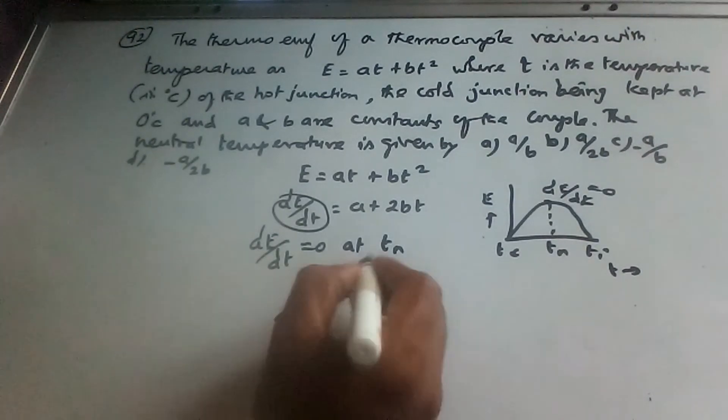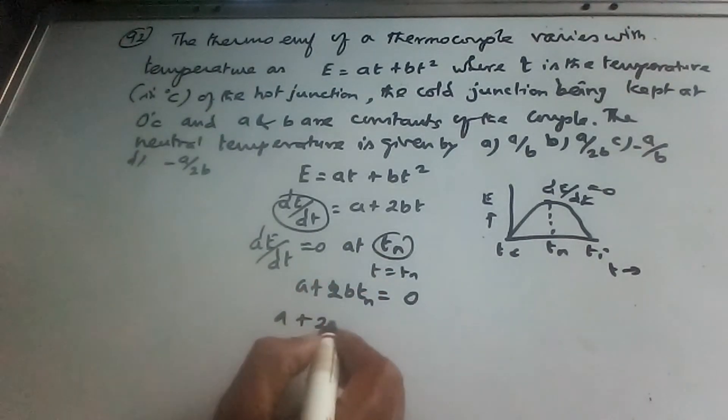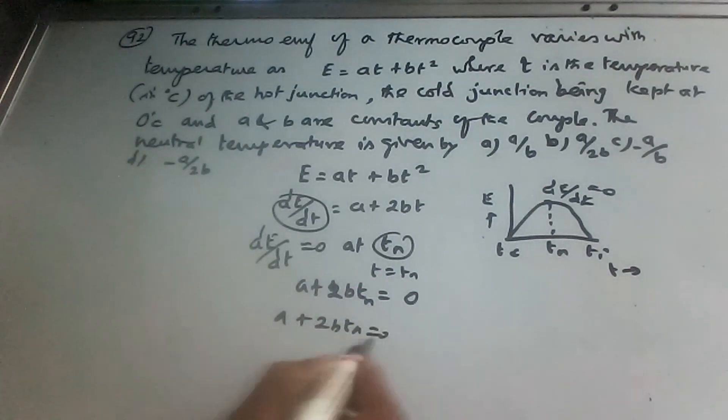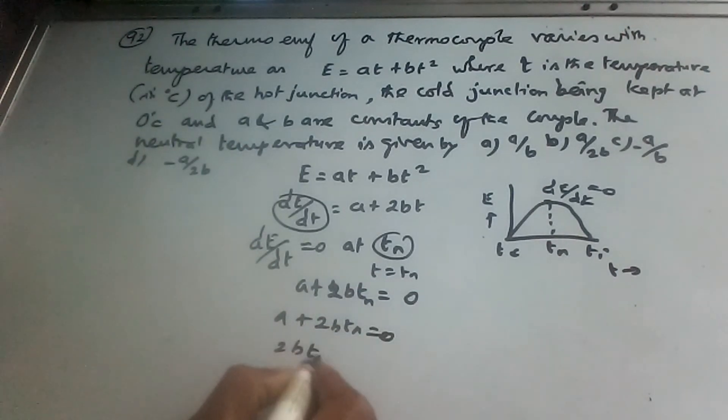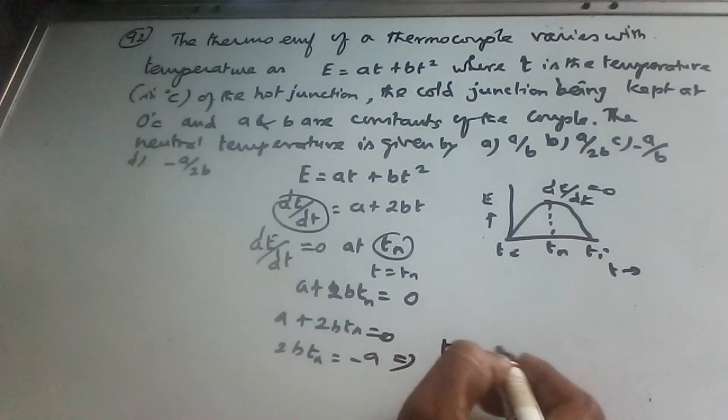When dE by dT is equal to 0, we have A plus 2BT at T equal to T_n. So A plus 2BT_n equal to zero. Therefore, 2BT_n equal to minus A, and the neutral temperature T_n equal to minus A by 2B.